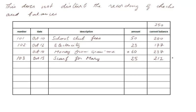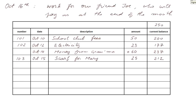Now comes another non-standard entry. On October 16th we do work for our friend Joe, but Joe will pay us only at the end of the month. Suppose the work amounts to 80 euros. Can we write plus 80, just like the money from grandma? If we did, we'd show a new balance of 292 — but that would not be correct, because our real balance at the bank on October 16th after the work for Joe would not actually be 292.